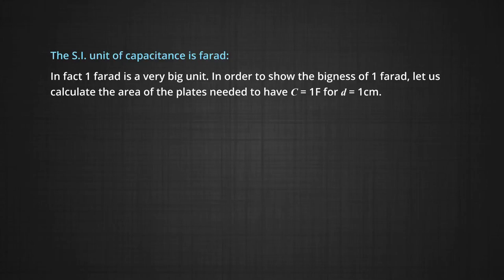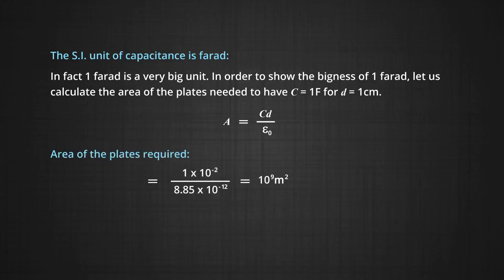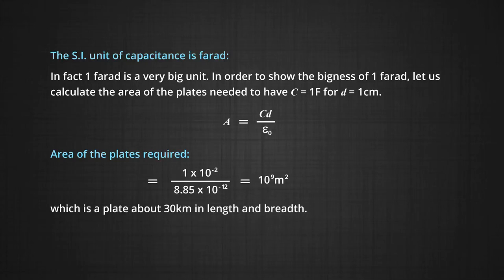The SI unit of capacitance is farad, which we have already done in the previous module. In fact, one farad is a very big unit. To show the enormity of one farad, let us calculate the area of the plates needed to have a capacitor of capacitance one farad when the distance between the plates D is one centimeter only. Using the formula A is equal to C times D upon epsilon naught, on substituting the values, we get area of the plate required is 1 × 10⁻² upon 8.85 × 10⁻¹², taking the medium to be vacuum. This comes out to be 10⁹ metre square — a plate about 30 kilometres in length and breadth.